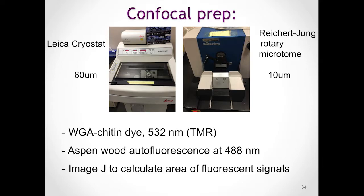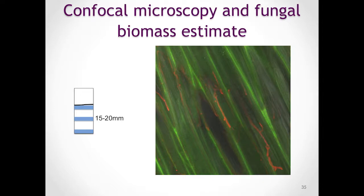The idea is to use the fluorescent signal produced from the chitin-specific probe to calculate the area of the fluorescent signal and use that as a type of biomarker or estimate of our fungal biomass. In a preliminary image, in red you can see the fluorescent signal emitted from the fungus as it's grown through wood, and in green you can see the autofluorescence from the wood — these light green lines indicating the way the grain of the wood is growing. We're trying to use software from an imaging package called ImageJ to tease these signals apart and calculate areas of fluorescence.